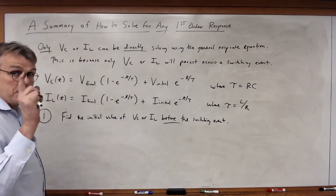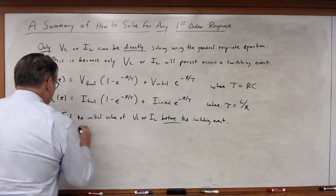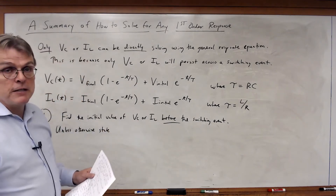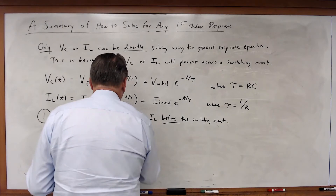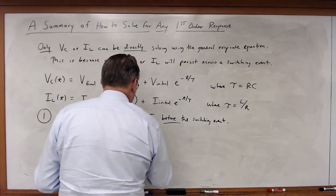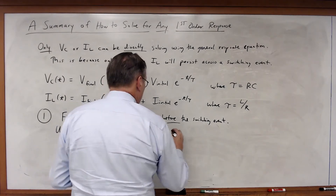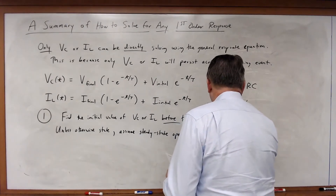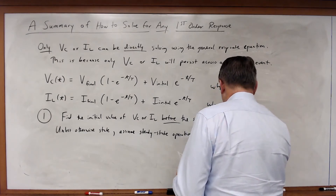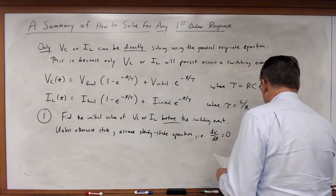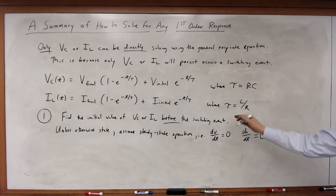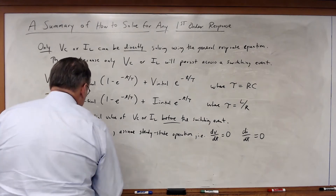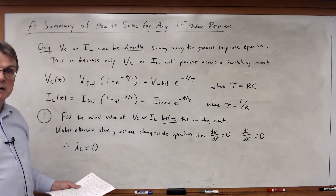Unless otherwise stated, you should always assume steady-state conditions for t less than zero. In other words, dv/dt = 0 and di/dt = 0 throughout the circuit — all voltages and currents are stable. Under these conditions, IC = 0 through a capacitor, meaning the capacitor acts like an open circuit.